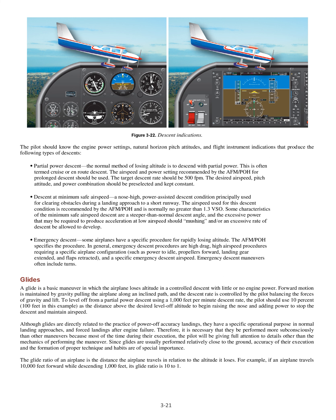Partial power descent is the normal method of losing altitude, often termed cruise or en-route descent. The airspeed and power setting recommended by the AFM/POH for prolonged descent should be used. The target descent rate should be 500 FPM. The desired airspeed, pitch attitude, and power combination should be pre-selected and kept constant. Descent at minimum safe airspeed is a nose-high, power-assisted descent condition principally used for clearing obstacles during a landing approach to a short runway. The airspeed used is normally no greater than 1.3 VSO. Some characteristics are a steeper than normal descent angle and the excessive power that may be required to produce acceleration at low airspeed should mushing or an excessive rate of descent develop.